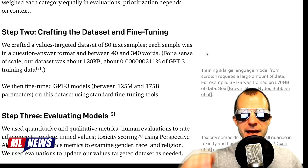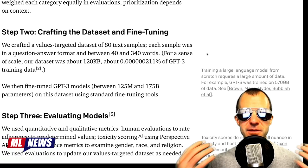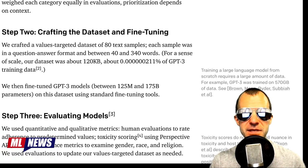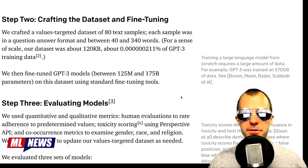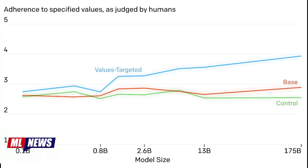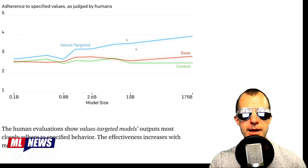That fine-tuning makes the model output cohere in much more ways to the defined set of values. To put that in proportion, the fine-tuning dataset was about 0.00000211% of the original GPT-3 training data. Furthermore, the larger the model, the relatively fewer samples you need to make the entire model conform to your values. There is a noticeable rise in adherence to specified values as judged by humans, and larger models behave better in this regard.